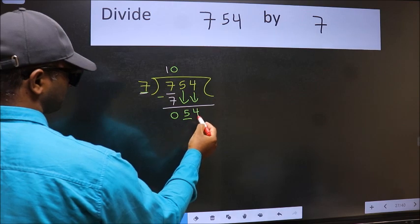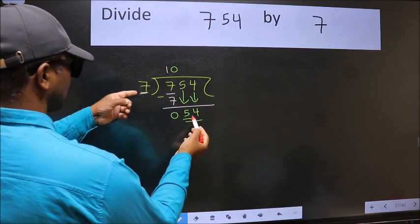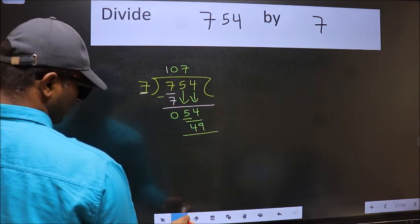Now 54. The number close to 54 in the seven table is seven sevens 49. Now we subtract and get five.